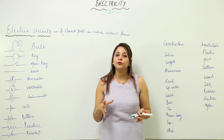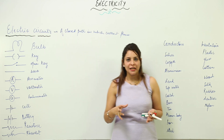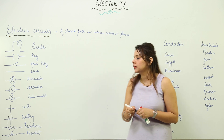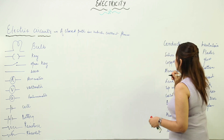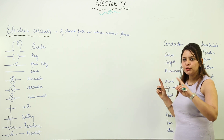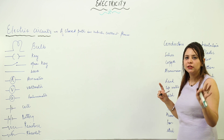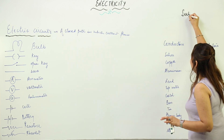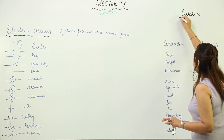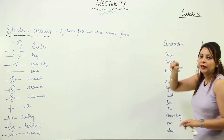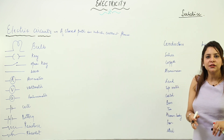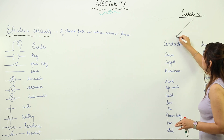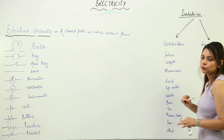We have different kinds of substances: conductors, semiconductors, and insulators. I'm going to classify them into two categories first, then explain the third one also. When we talk of any substance or material — whether it can conduct electricity or not — it is divided into two categories: conductors and insulators.